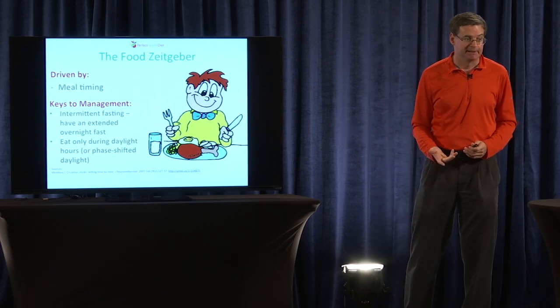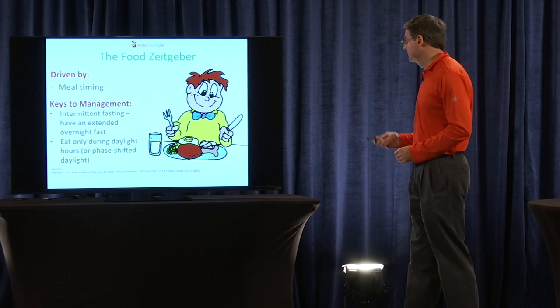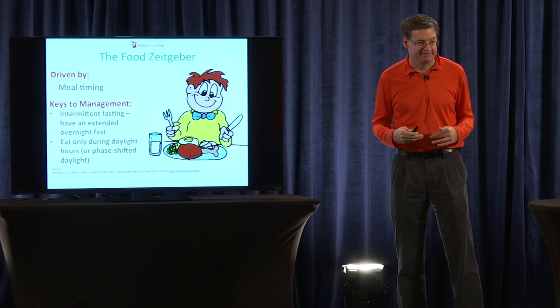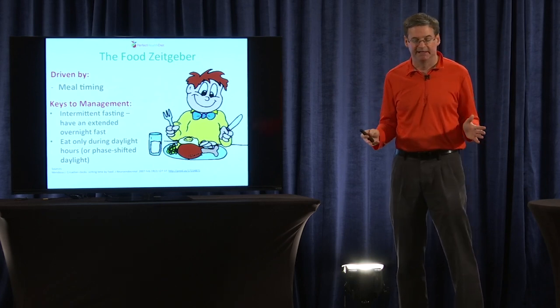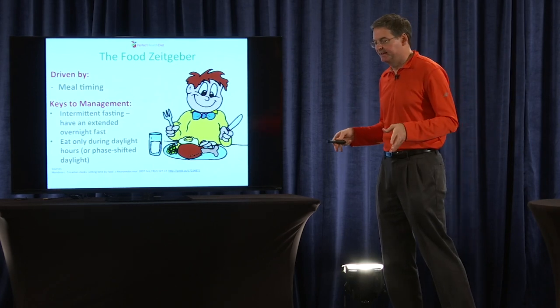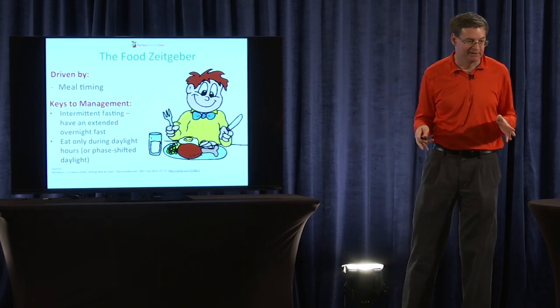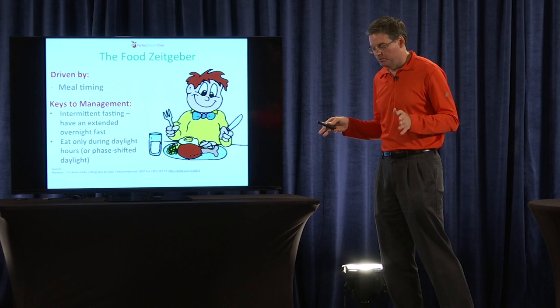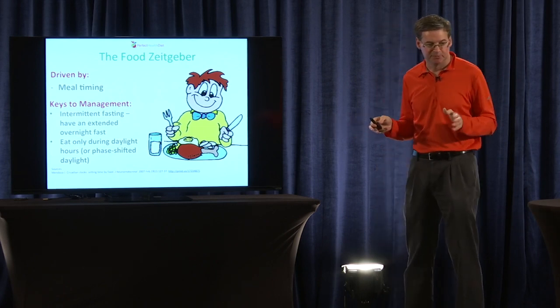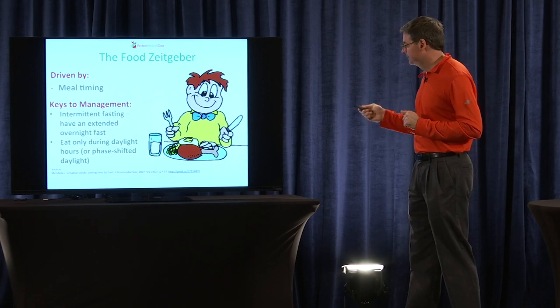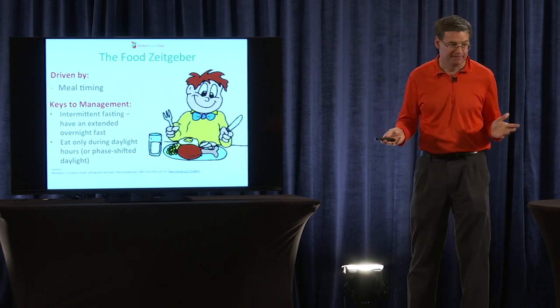Food, extremely important circadian rhythm entrainer. It's very important to do intermittent fasting, have an extended overnight fast. You should never eat any calories at night. And you should have at least a 12-hour night. So once it's nighttime for you, don't eat any more calories. And you should actually extend the fast longer than 12 hours. So I generally do about 16, and I think that's about optimal.